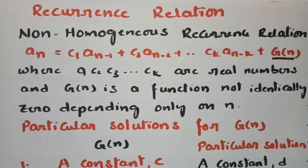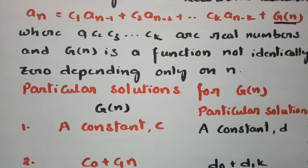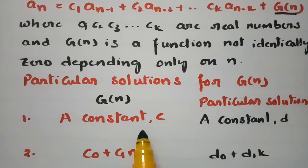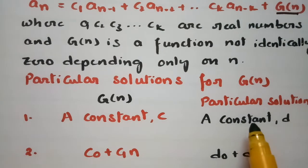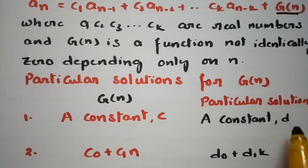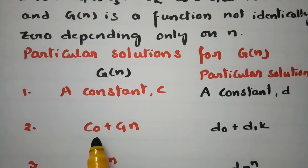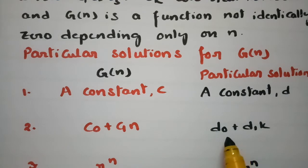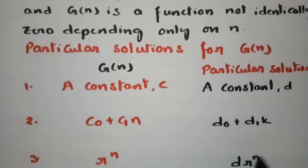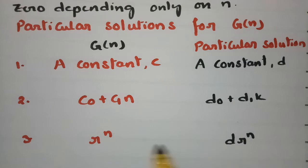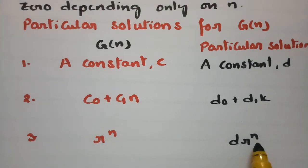For finding the general solution we have to find the homogeneous solution as well as the particular solution. In my earlier videos I explained how to find the homogeneous solution. For the particular solution: if g(n) is a constant, assume a particular solution d (a constant); if g(n) = c₀ + c₁n, assume d₀ + d₁n; and if g(n) = rⁿ, assume d·rⁿ.